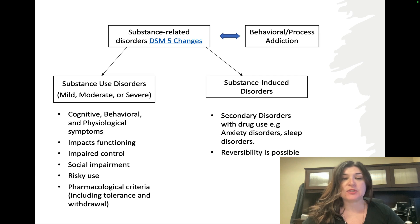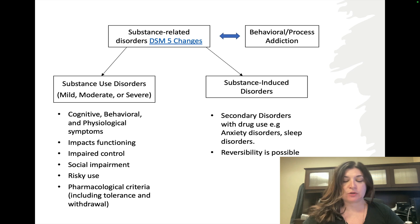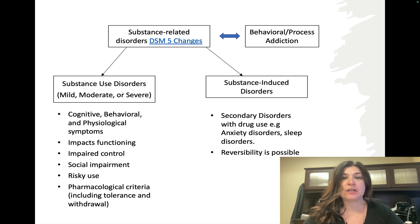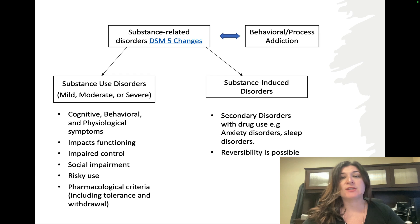A mild substance use disorder requires meeting two to three symptoms or criteria. Moderate requires four to five, and severe is six or more. Within substance use disorders, individuals might struggle with one or more of the following: cognitive, behavioral, and psychological symptoms; impaired control or impact on day-to-day functioning; social impairment; risky use of substances or risky behaviors; and pharmacological criteria such as withdrawal or tolerance levels.